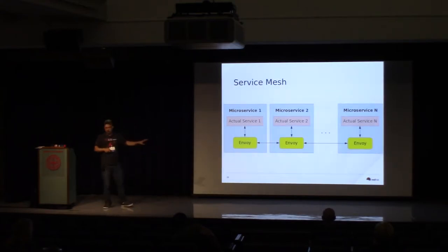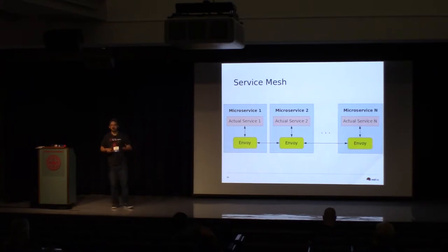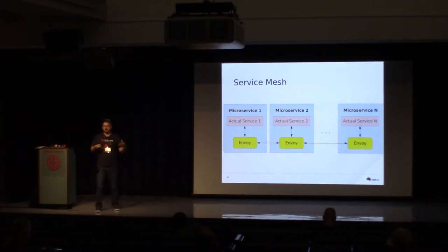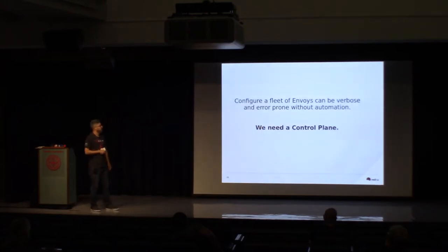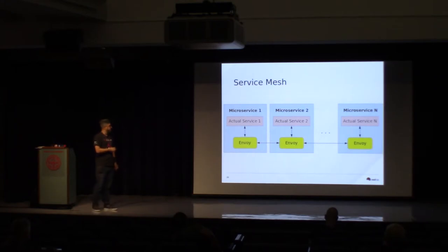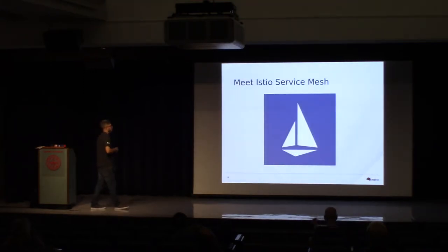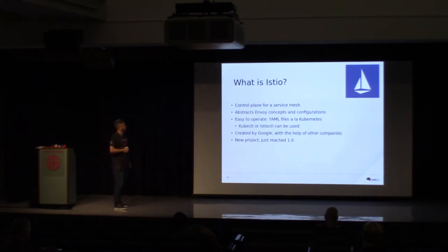This is the concept of a service mesh: a bunch of services with a proxy inside each pod, communicating through each other's proxies. Services do not talk directly to other services — Envoy talks to Envoy. But configuring a fleet of Envoys can be verbose and error-prone without automation, so we need a control plane — something that configures and sets up all those Envoys automatically, so developers only worry about their code. So let me introduce Istio: Istio is the control plane for the service mesh.